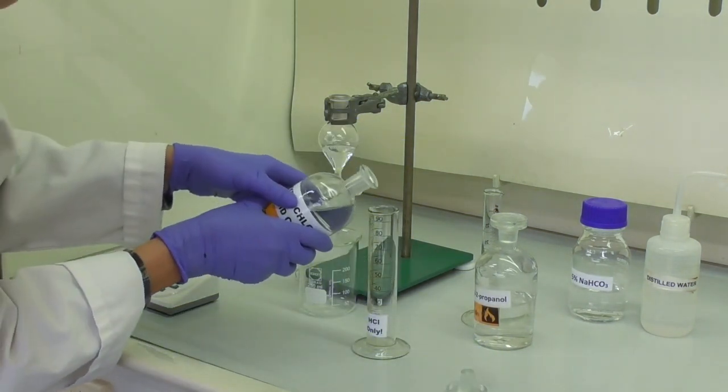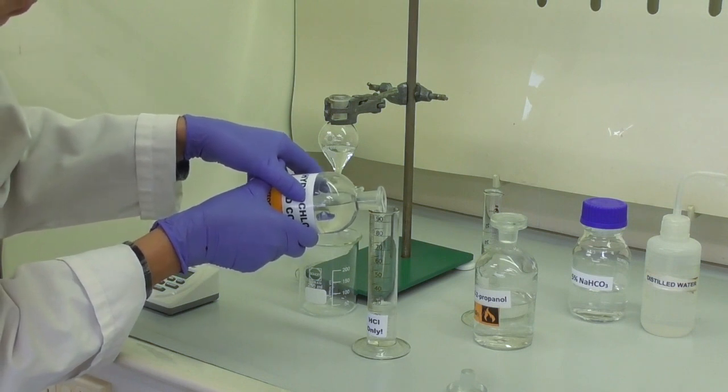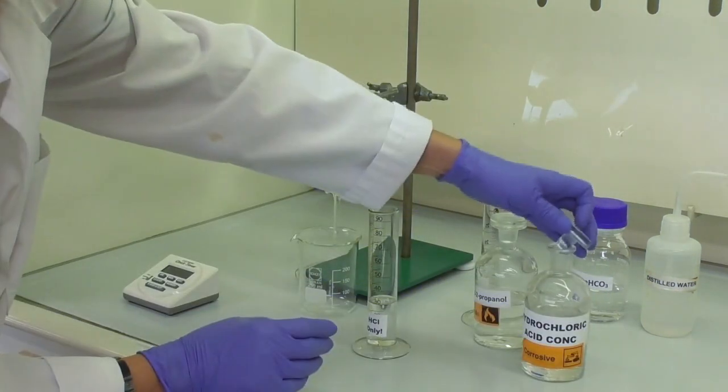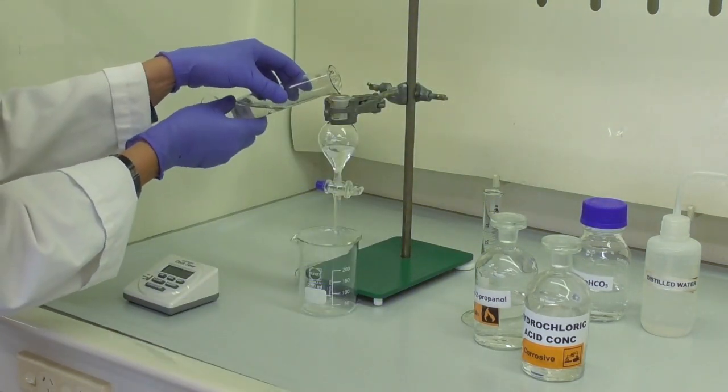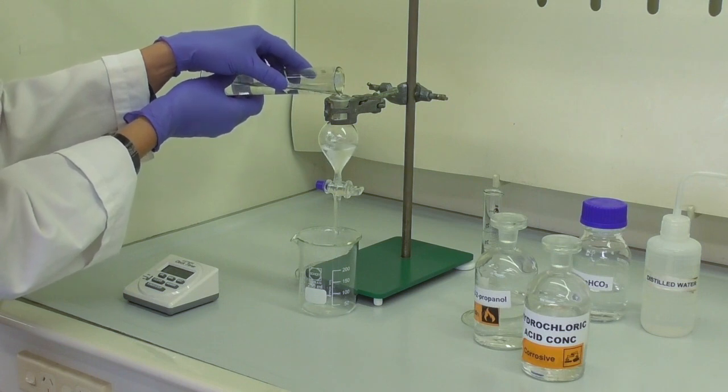Next we measure out 30 ml of concentrated hydrochloric acid in a separate graduated cylinder and carefully pour this into the alcohol that is already in the separating funnel.